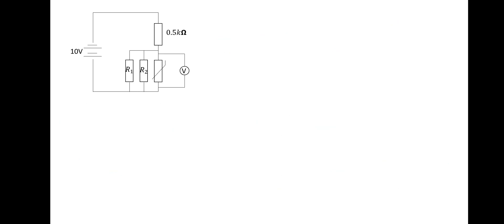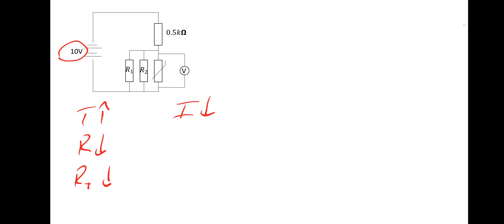What happens to the voltmeter reading if the temperature of the thermistor increases? If the temperature increases, the resistance decreases, which means the total resistance of the circuit decreases. With total voltage remaining at a constant 10 volts, the total current will increase, so the voltmeter reading for the parallel section will also increase. Put that into words as we've done in previous questions.